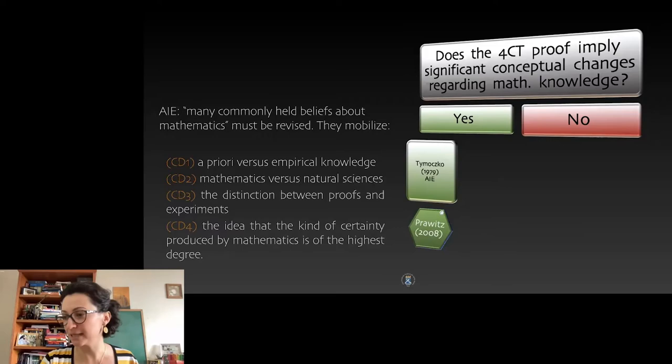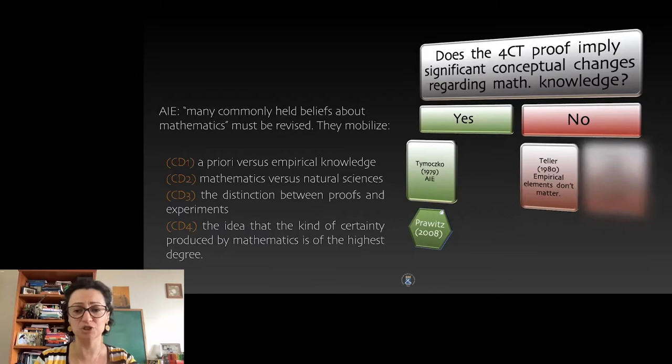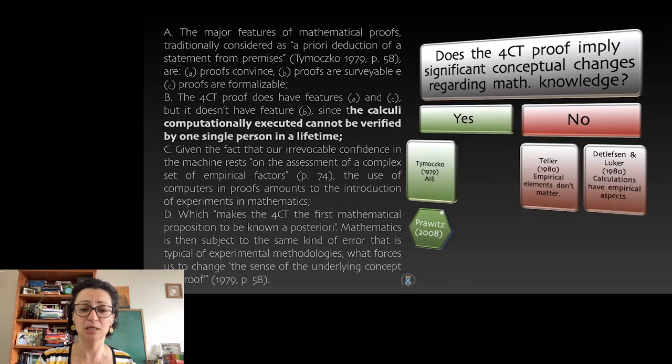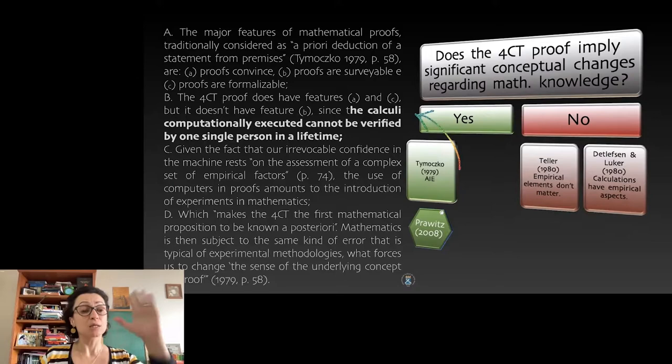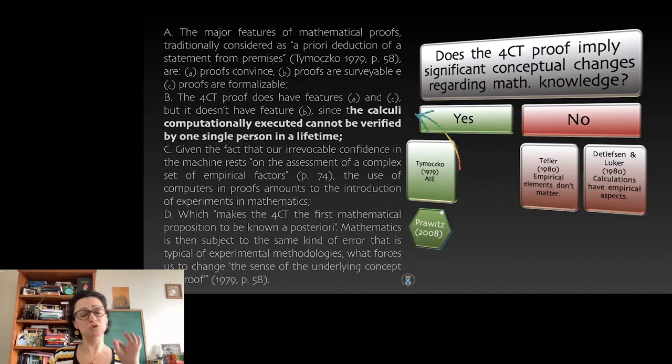Here are just other participants in the debate. The most curious one for me is Stuart Shanker that said that it was not a proof, it was an experiment. The argument—and I'm not going into the details of Tymoczko's argument, I do just the two first premises—he says, look, traditionally proofs are characterized by these three features: they convince, they are surveyable, and they are formalizable. But the Four Color Theorem proof, although it is convincible, it has the capacity to convince, which is contentious because, you know, it took some time and even nowadays there are people saying that it's not a proof. But he says it convinces, it is formalizable, but it's not surveyable because computers did part of the job.